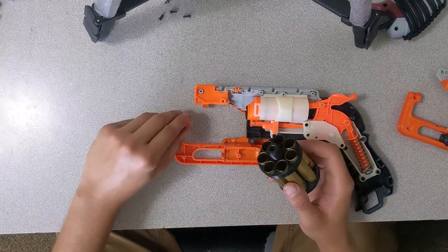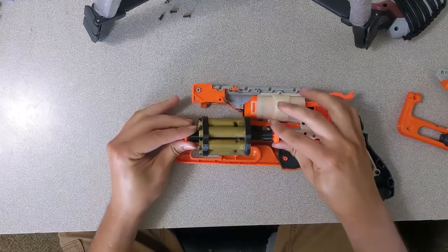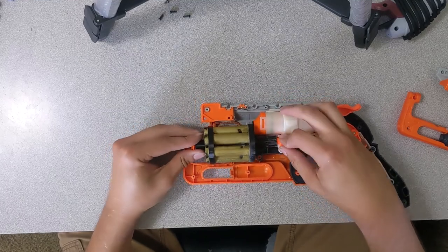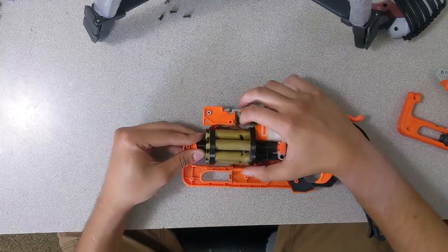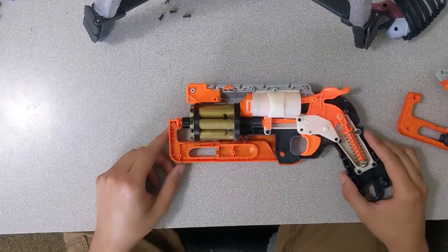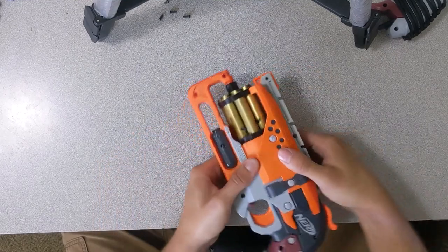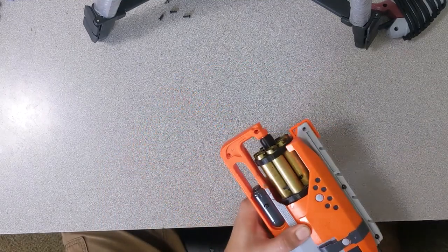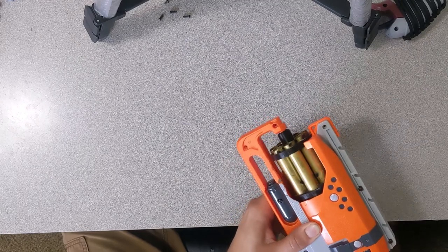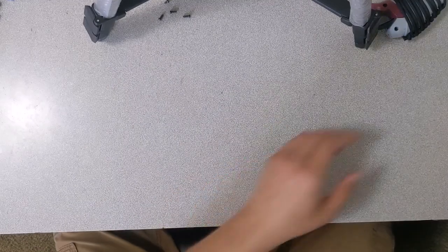So with that, that is the Nerf Hammershot seven-shot blaster modification. Well, I should rephrase: this is the Nerf Hammershot seven-shot brass barrel modification. So with that I give you a functional blaster, and not just one but I've got two of them so I can dual wield.